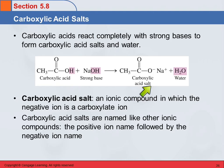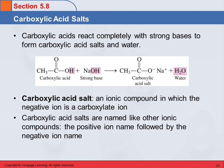So what would the name of this compound be? You name the cation first — that's sodium. And the anion is ethanoate, because it has two carbons. So the IUPAC name is sodium ethanoate.